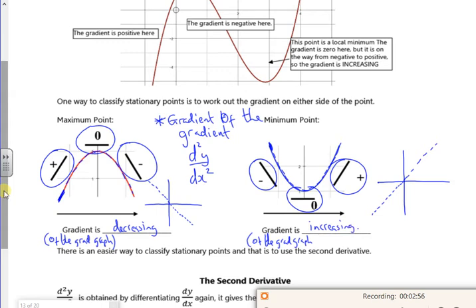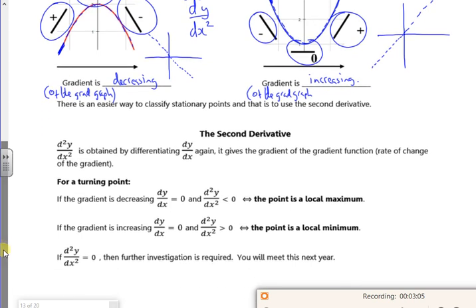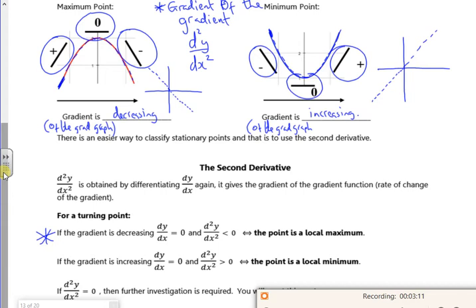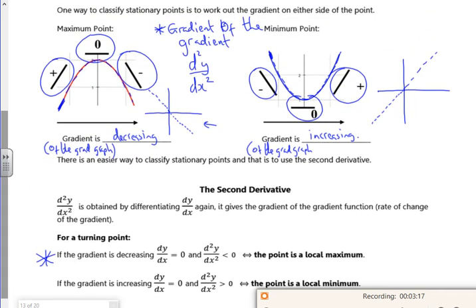Properly messes with your head. But what it does tell us is for a maximum point, the second differential is less than zero. There. So, you can see that for a maximum point, because of this graph here, the second differential is less than zero.